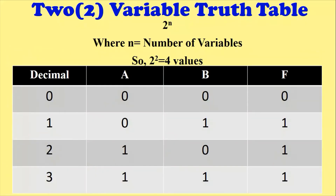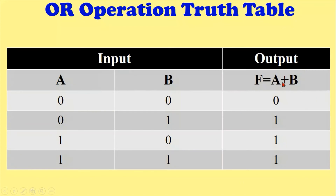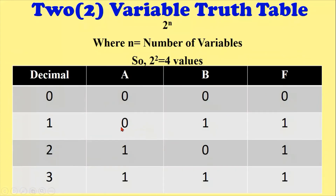In this two-variable truth table, the output F equals A plus B — plus means OR operation. For example: zero plus zero equals zero; zero plus one equals one; one plus zero equals one; and one plus one equals one. So this is the truth table of two variables.